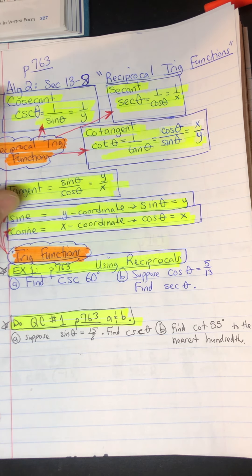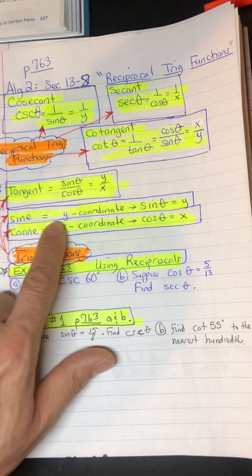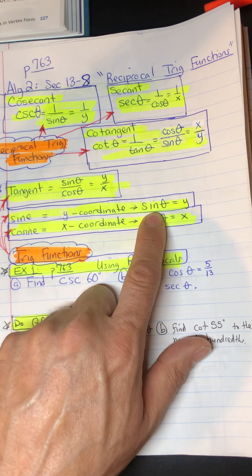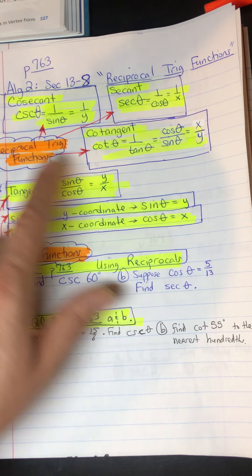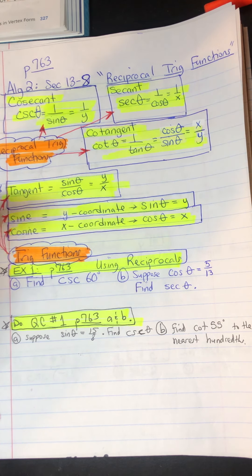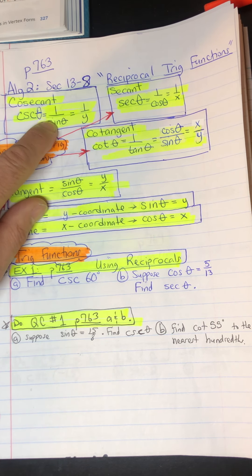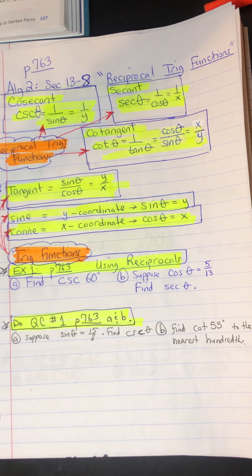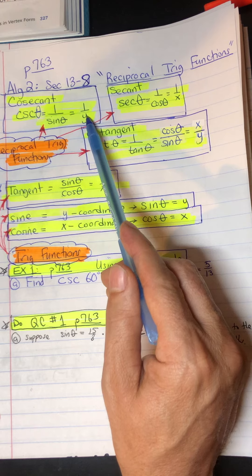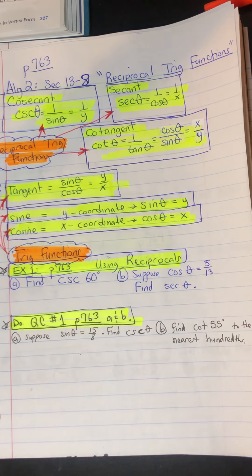Here's what we have to memorize. The reciprocal of sine: sine is the y-coordinate on the unit circle, so sine of theta equals the y-coordinate. Cosecant is the reciprocal of sine, so cosecant equals 1 over sine of theta, which is 1 over y. Instead of being the y-coordinate, cosecant is the reciprocal of the y-coordinate — 1 over y. So if you can find sine, you can find cosecant.